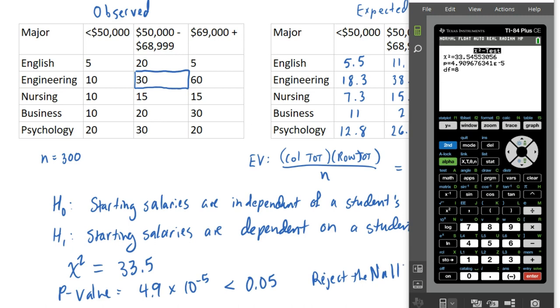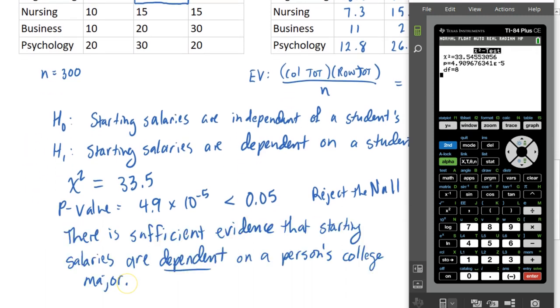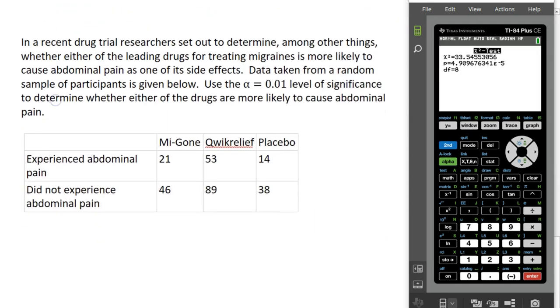So our conclusion is that salaries are somewhat dependent on a student's college major. So there is sufficient evidence that starting salaries are dependent on a person's college major. Now, that doesn't mean starting salaries don't depend on a lot of other things as well. And we don't know the degree to which they're dependent on strictly what somebody majored in college. But we have statistical evidence that there is a relationship between what a student majors in and what kind of starting salary they receive. So they're definitely not independent based on our test. Let's look at one other example real quick.